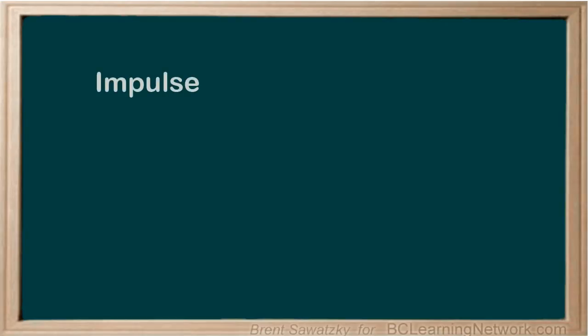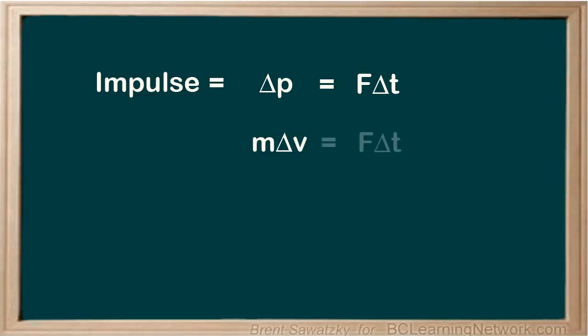Let's look at impulse. Impulse equals the change in momentum, but it also equals F·ΔT — the force times the time over which that force acted. Remember that delta represents the change in something. The word impulse itself is kind of irrelevant; it's all about the change in momentum being equal to the force times the time. Impulse is just a term we use to help discuss this relationship.